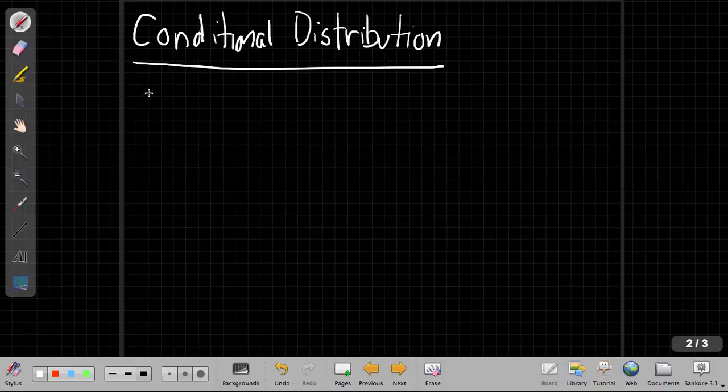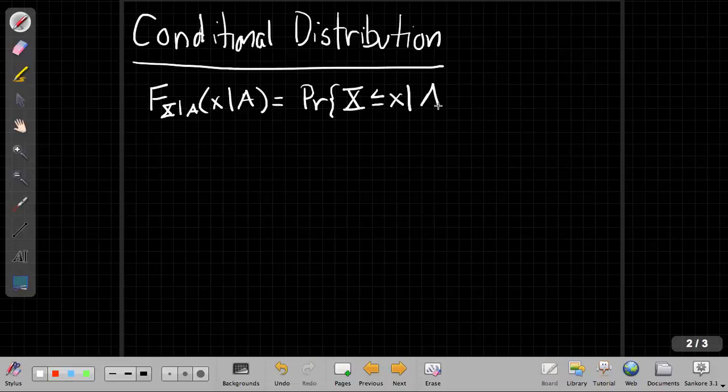If I want a conditional distribution, so I'd say that would be capital F of X on some event A, and the argument, the outcome would be little x of A, well then that's just a straight up definition with a conditional added in. So I'd say this is the probability that the random variable is less than or equal to the argument given the event A.